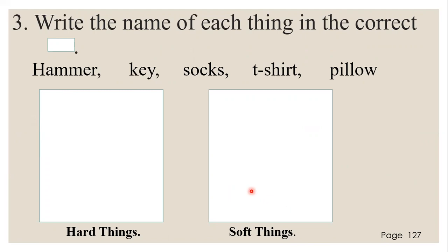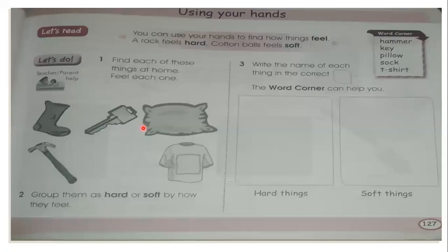So you're going to put the hammer — is the hammer hard or is it soft? Put it in the correct box. Key — is it hard or is it soft? Write it in the correct box. Socks — is it hard or is it soft? The t-shirt — is it soft or is it hard? Pillow — is it soft or is it hard? Write all the names in the correct box. This is what your page 127 should look like in your integrated studies book — this is the page you should be working on.